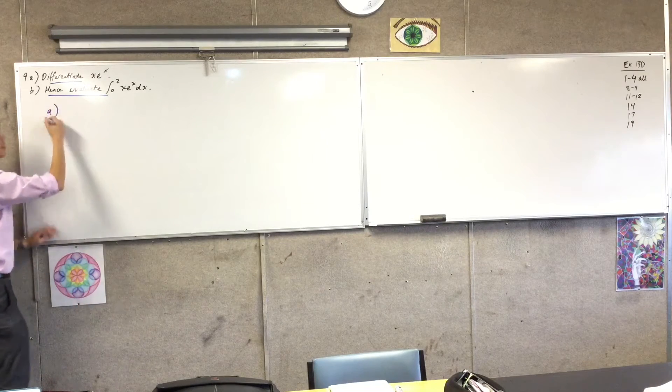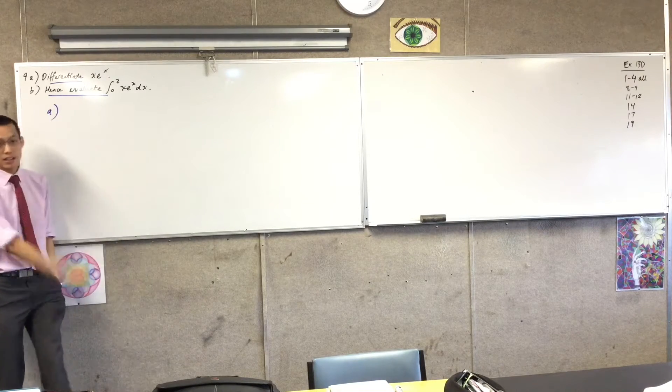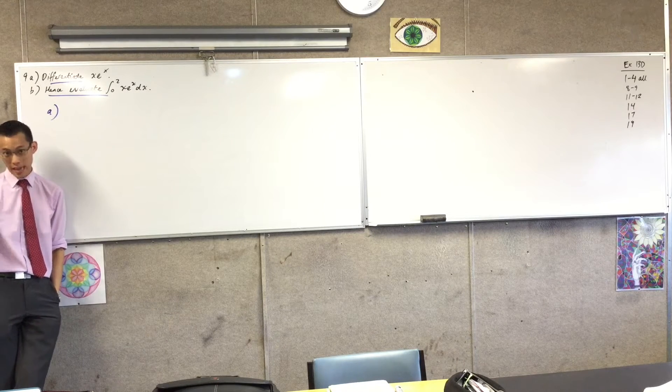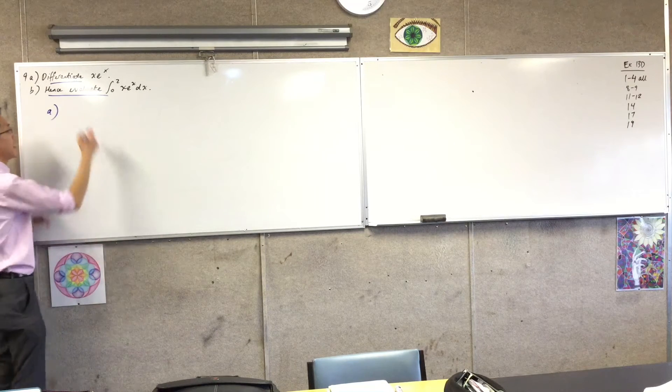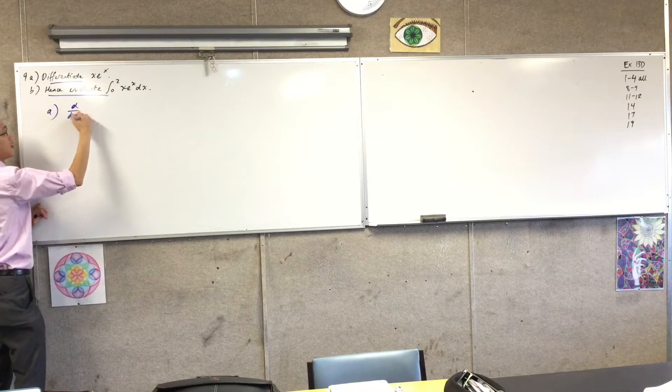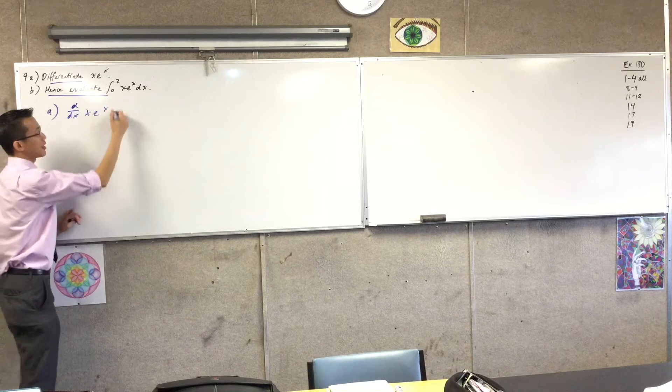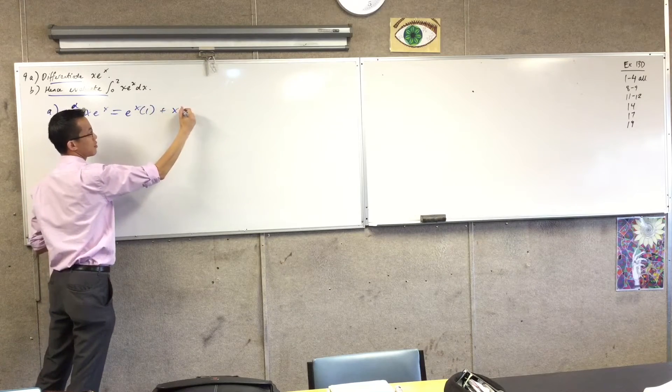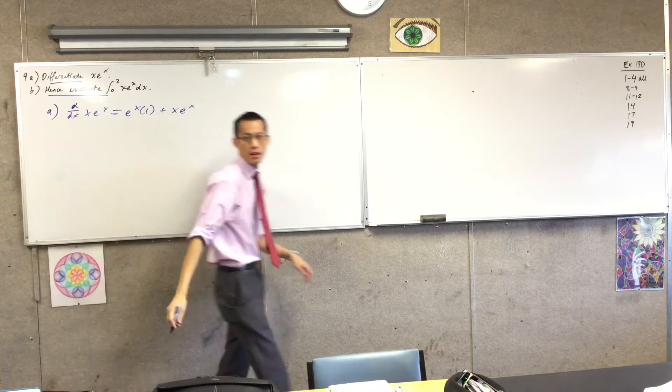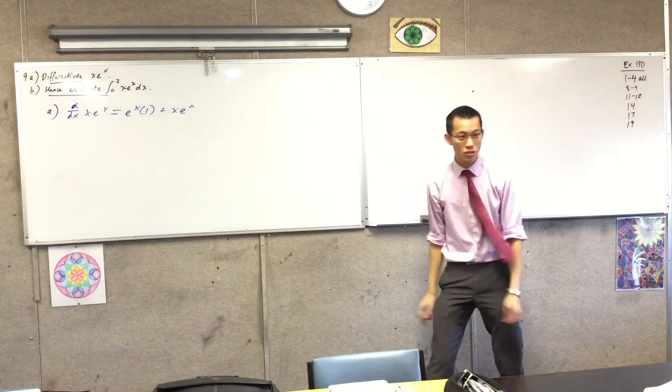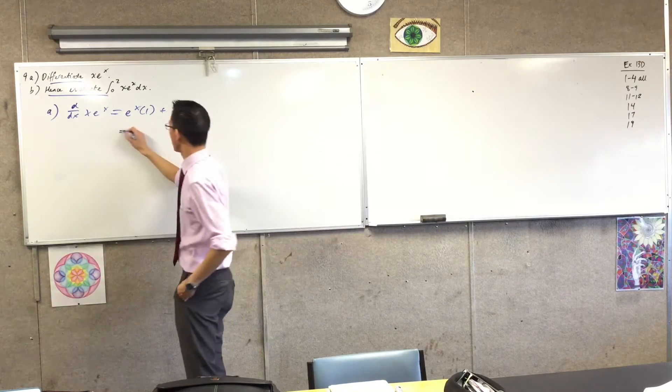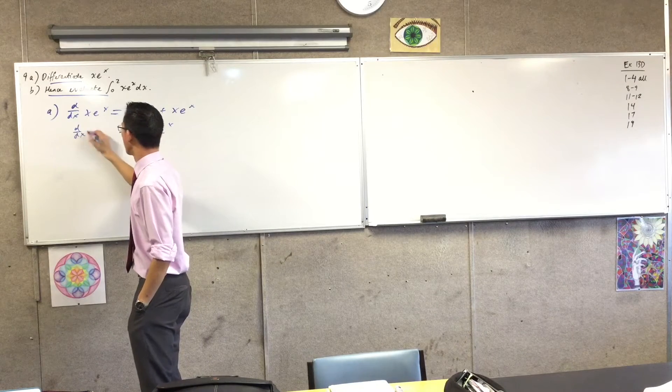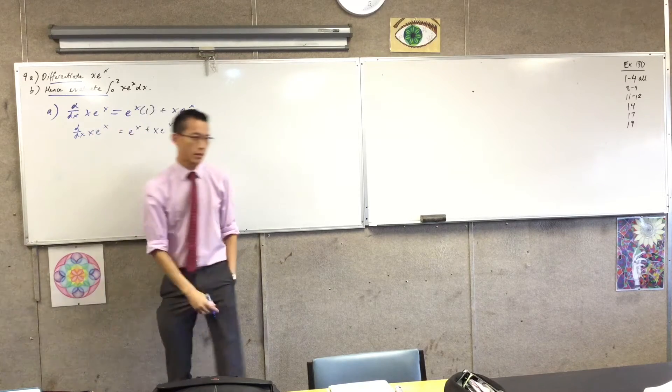So part A, this is the easy bit, right? What kind of knowledge do we need to differentiate this? Any product rule, because it's x times e to the x. So I'm just going to go straight into that. x times e to the x, I'm going to get v·u' plus u·v'. Are you happy with that? Just straight out, it's a little bit of simplifying to do. I mean, hardly really. But this is what I've got.